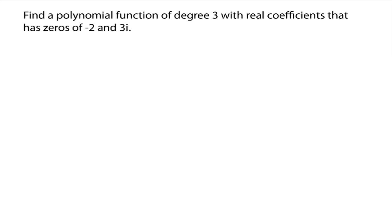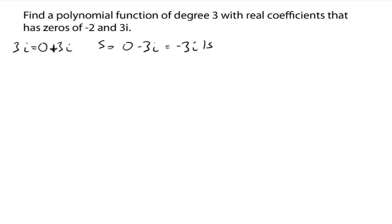Let's try this. Find a polynomial function of degree 3 with real coefficients that has zeros of negative 2 and 3i. Since 3i is a zero — remember that's like 0 plus 3i — its conjugate has to also be a zero. So 0 minus 3i, or just negative 3i, is also a zero. It has to be there.